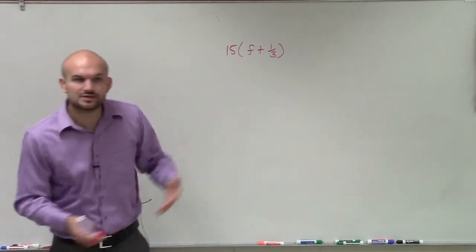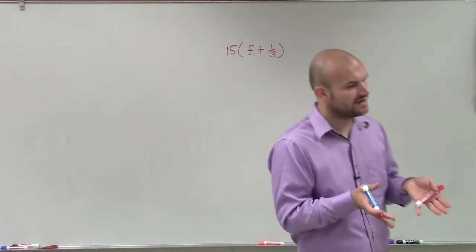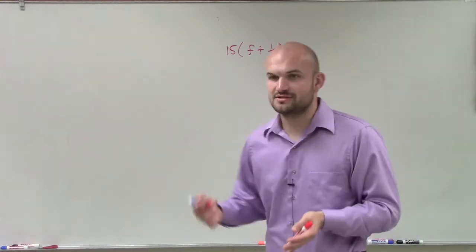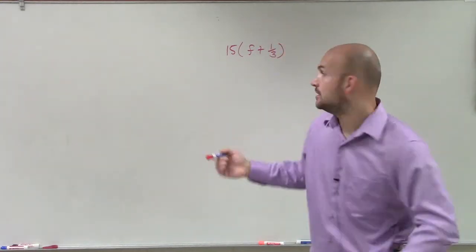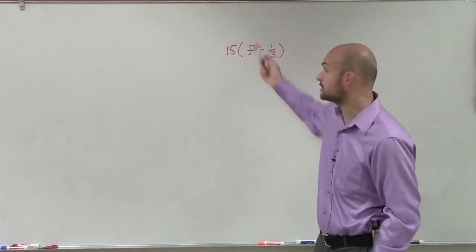To do that, remember distributive property: what it states is when we have a value outside of parentheses, you need to make sure we distribute across multiplication, across to both values.